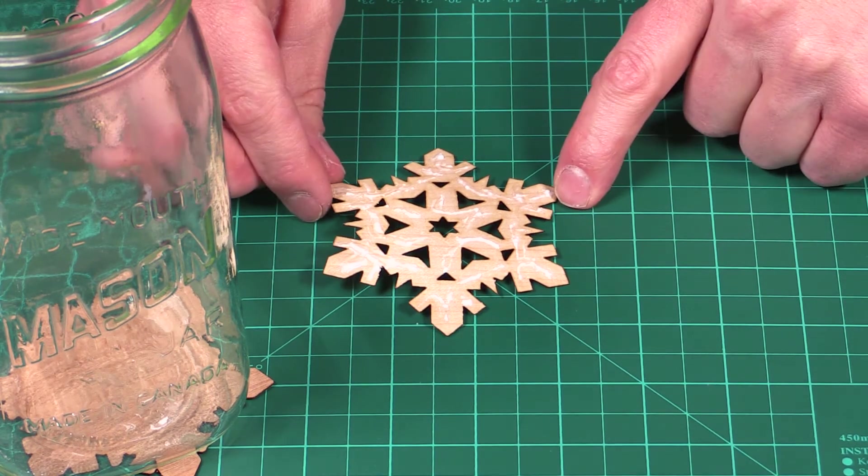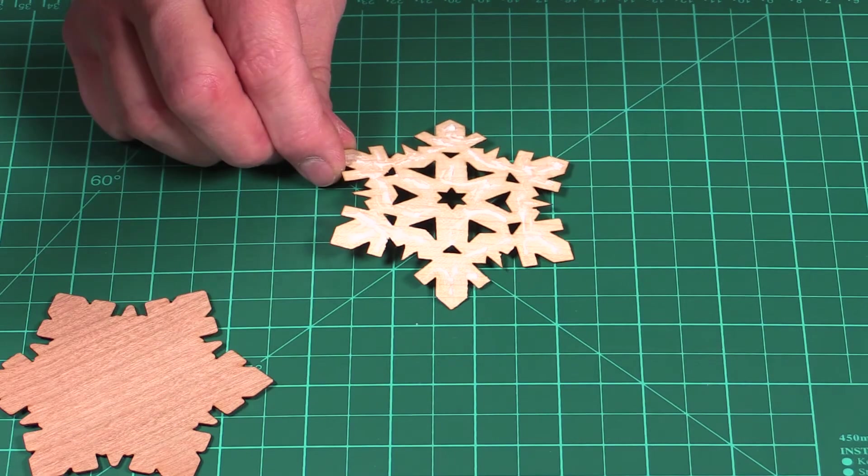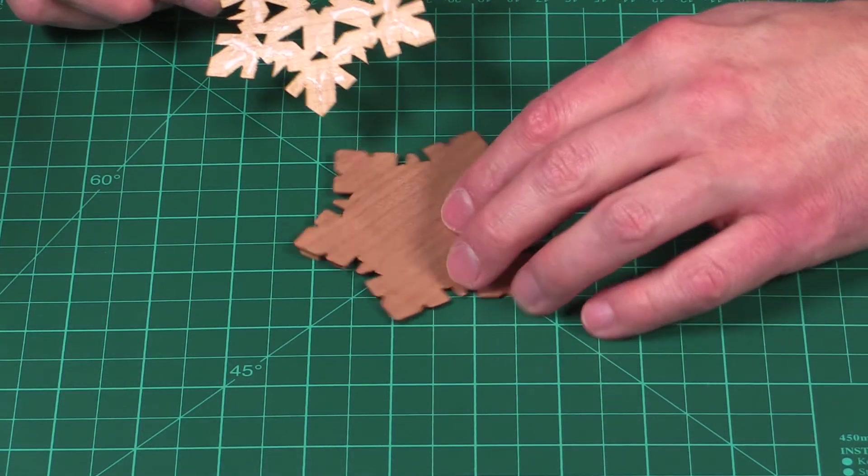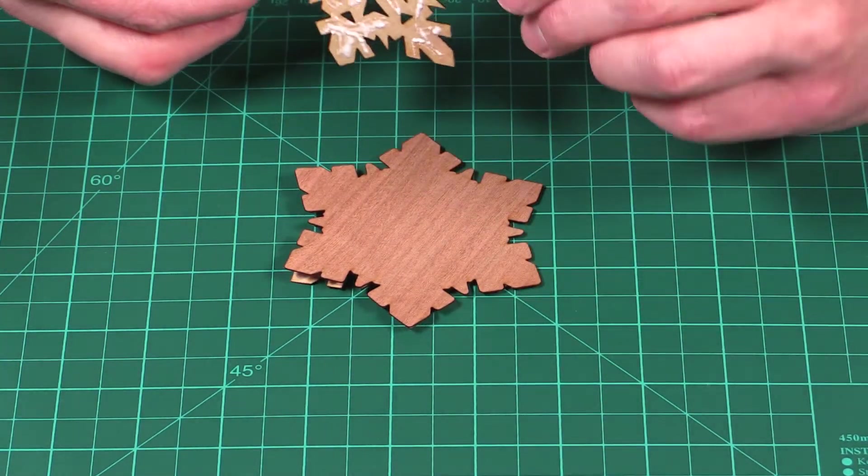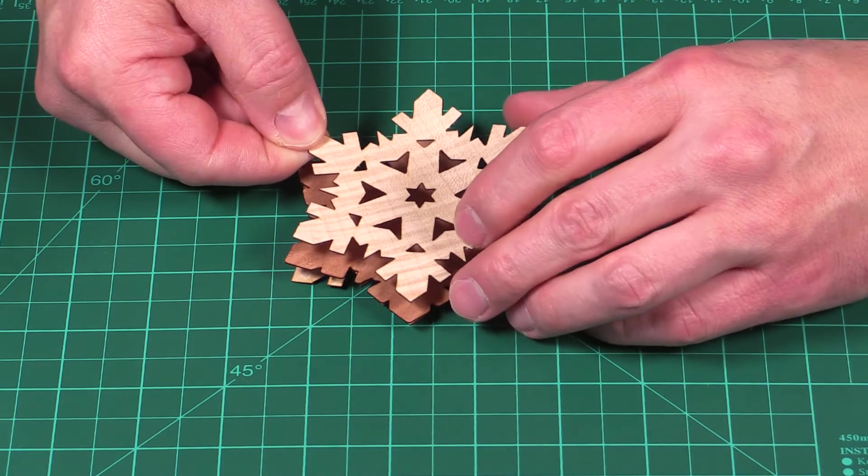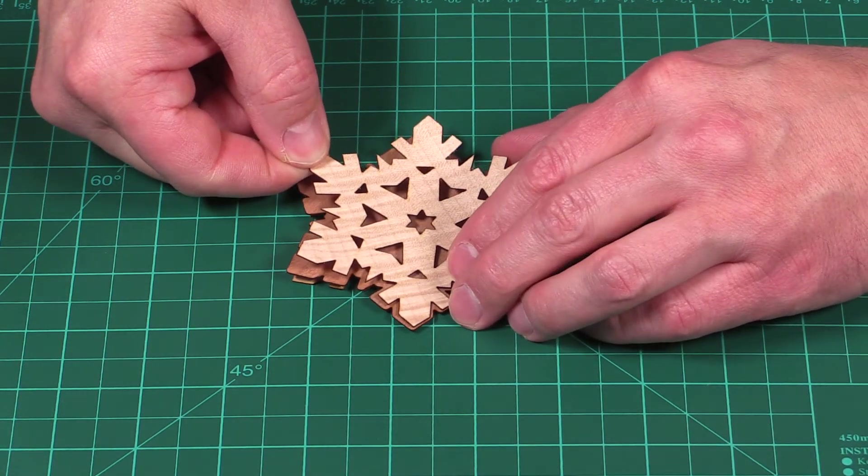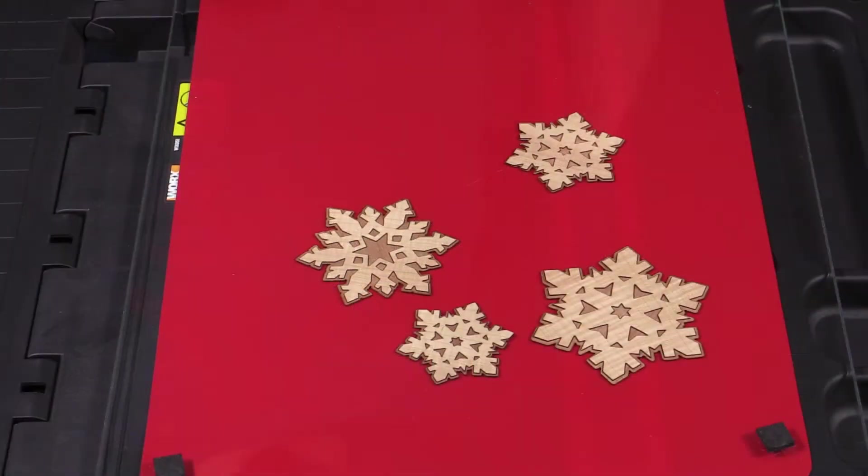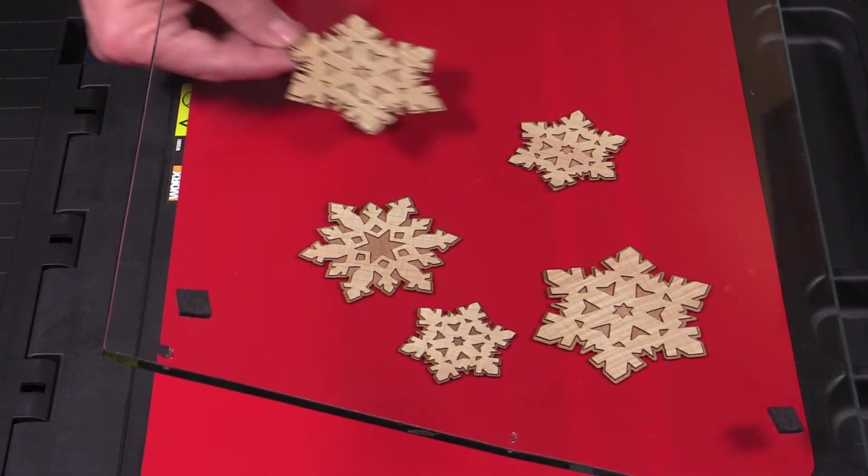Once you get this side all glued up, attach it to the snowflake the same way you attached the other side, making sure to only lightly attach it at first, line it up, and then firmly attach it after you have the border all in order. To make sure the layers of veneer don't curl and separate while drying, I've placed mine under a pane of heavy glass.